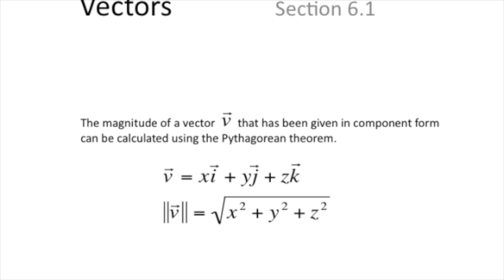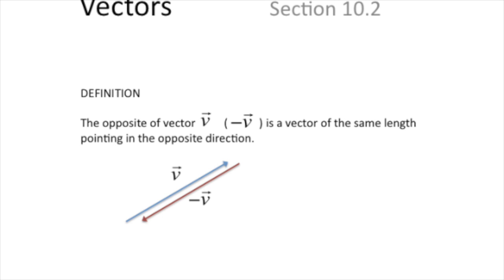In order to get the magnitude of a vector in component form, you use the Pythagorean theorem — even in the third dimension, where there's a three-dimensional form of the Pythagorean theorem. We're still just working through the framework of the definitions. The opposite of a vector has the same length but is pointed in the opposite direction. It doesn't have to be in the same place — it could be anywhere — but it's pointed in the opposite direction and has the same length.